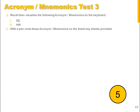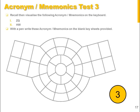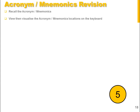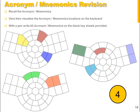Moving on to the test sheet. We will recall the acronyms and mnemonics, visualize their location on the keyboard. And once again, pause the video and see if you can remember where each of the acronyms and mnemonics should go. Now moving on to the revision sheet. At this stage, we have completed all the acronyms and mnemonics. So again, we will recall them all, view and visualize their location on the keyboard. Just pause the video and, using the blank keyboard diagram provided, see if you can fill in each of the acronyms and mnemonics represented here by each of the highlighted areas.